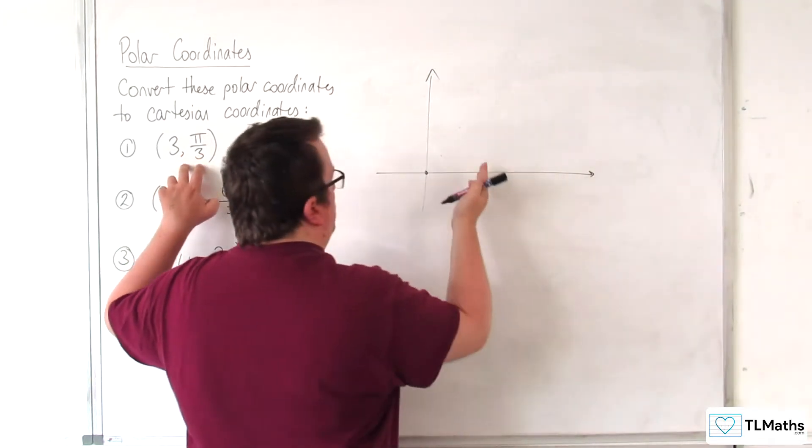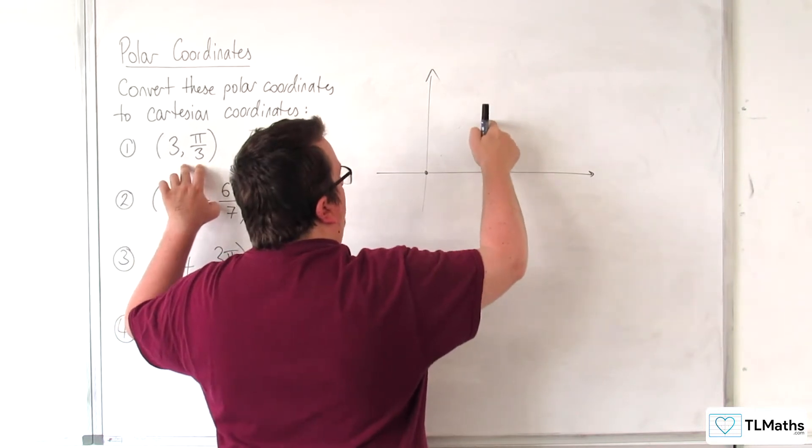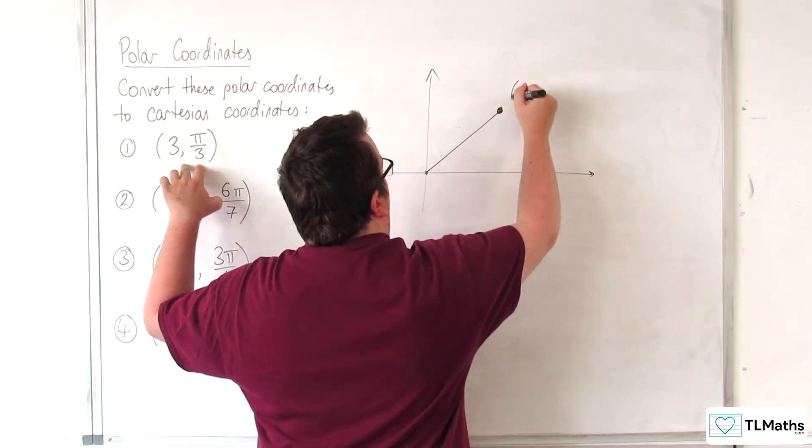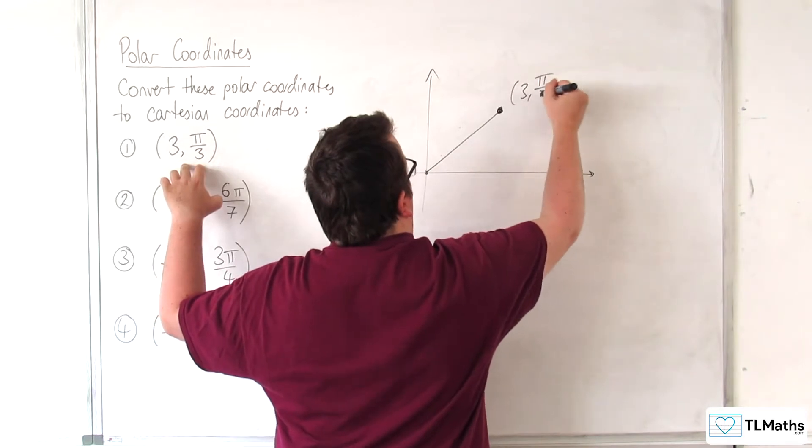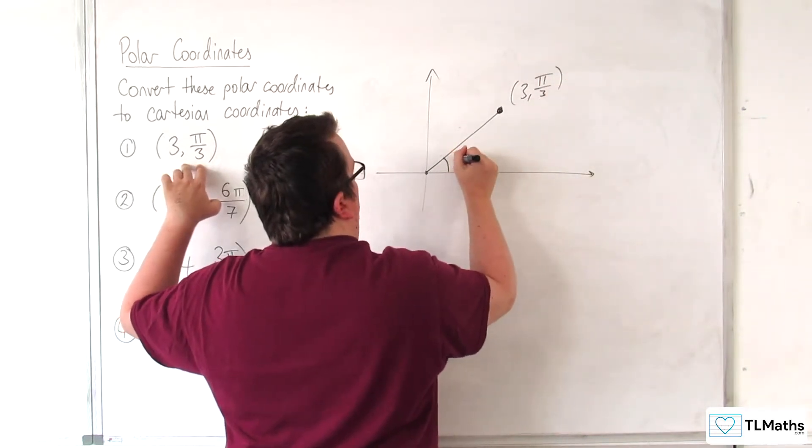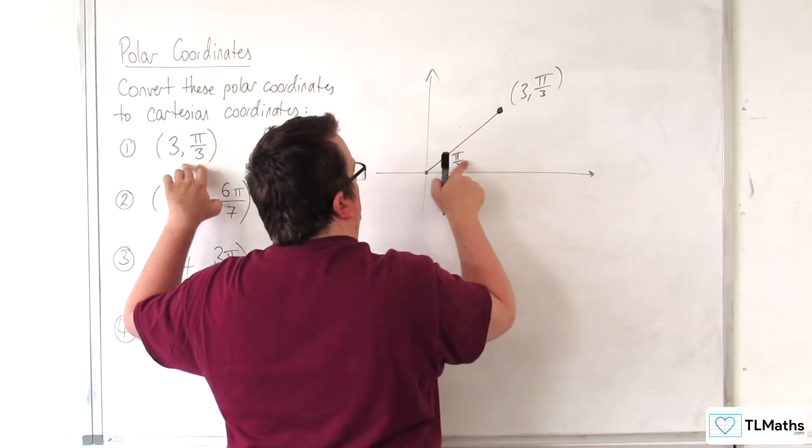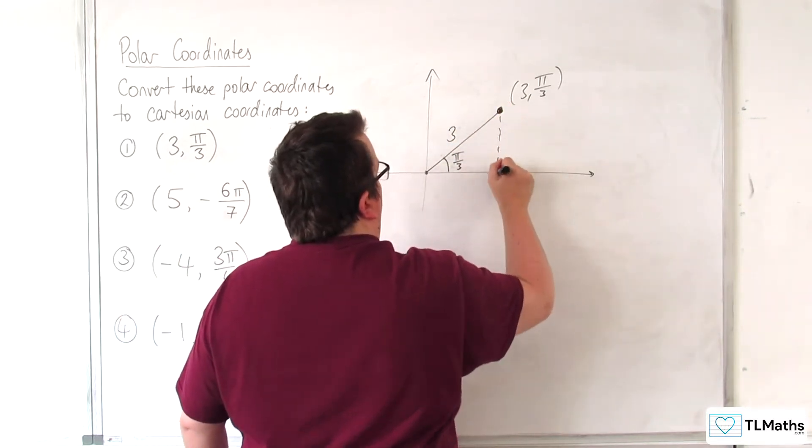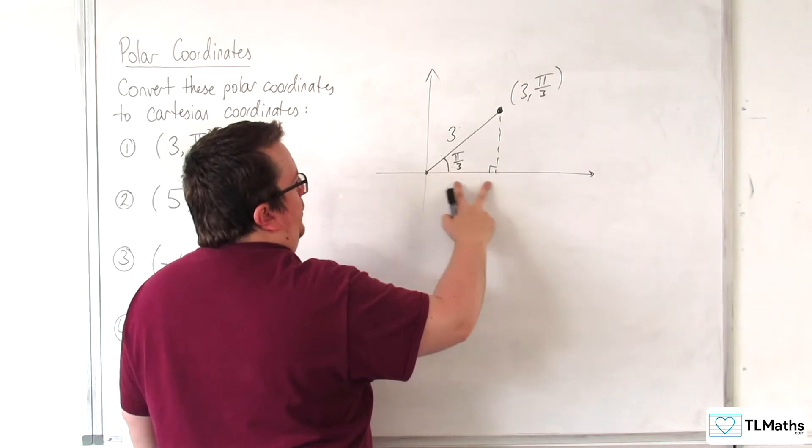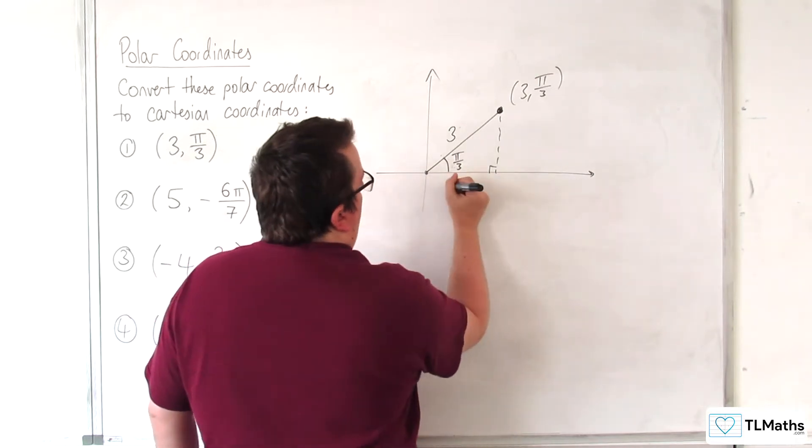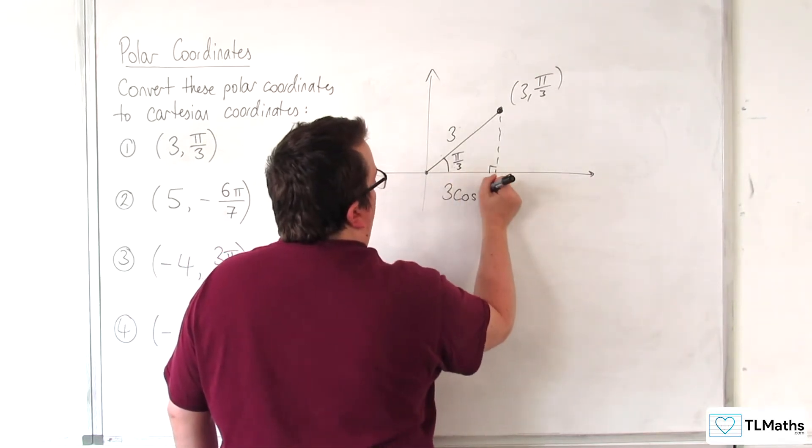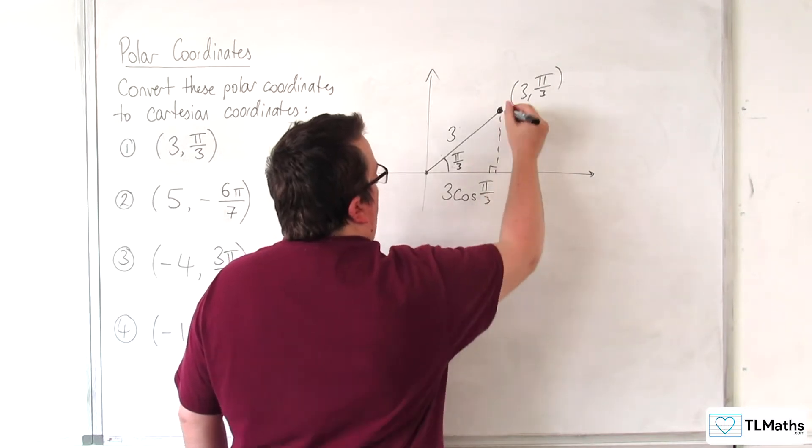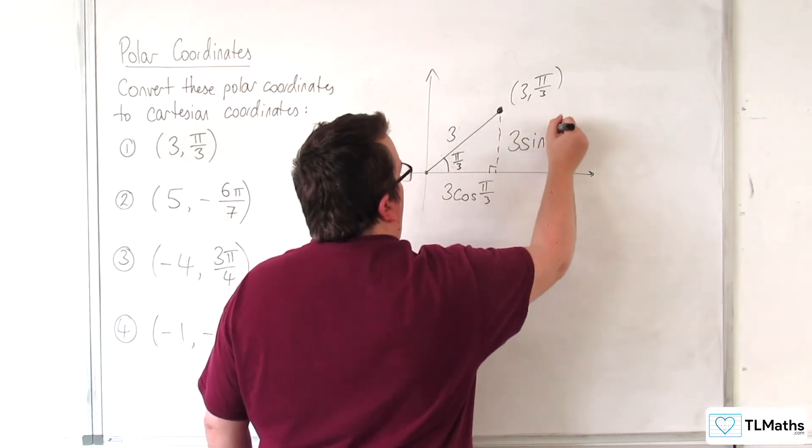So, pi over 3 is going to be up in this quadrant here. So, here's the point 3 pi over 3. That angle is pi over 3, and that length is 3. So, this horizontal distance for the adjacent is 3 cosine pi over 3, and this height is 3 sine pi over 3.